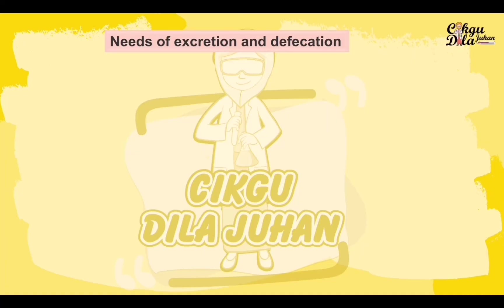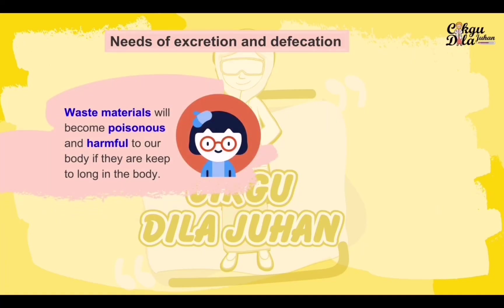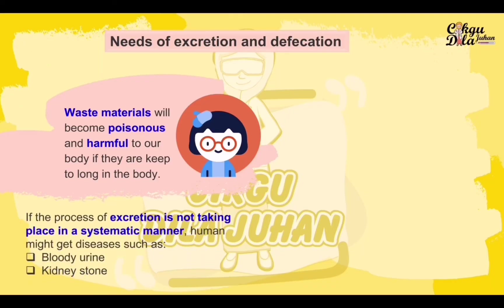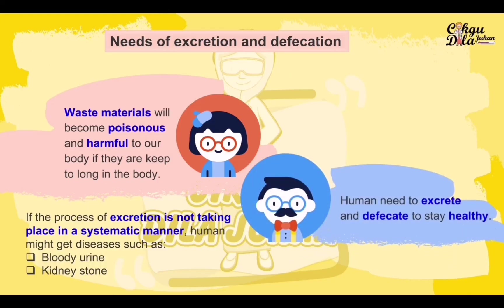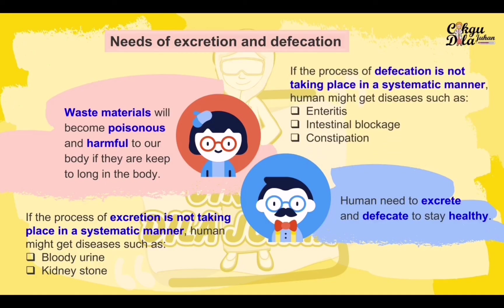Waste materials will become poisonous and harmful to our body if kept too long. If the process of excretion is not taking place in a systematic manner, humans might get diseases such as bloody urine or kidney stones. Humans need to excrete and defecate to stay healthy. If defecation is not taking place in a systematic manner, humans might get diseases such as enteritis, intestinal blockage, and constipation.